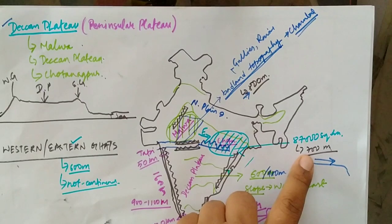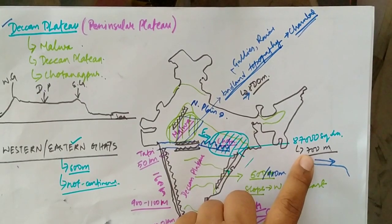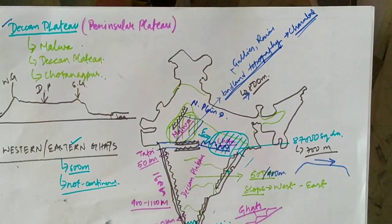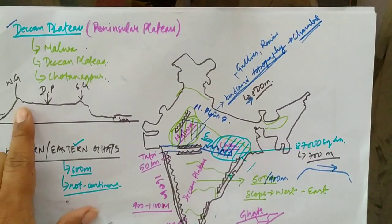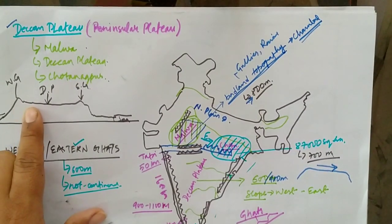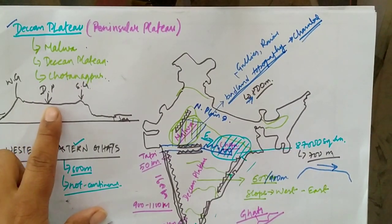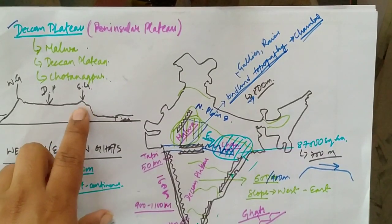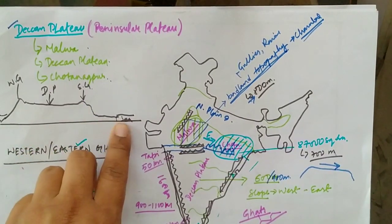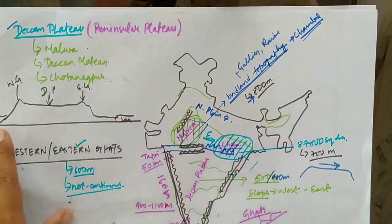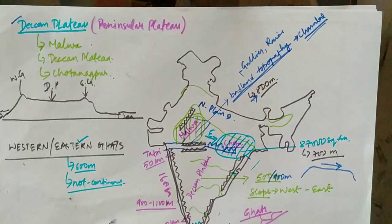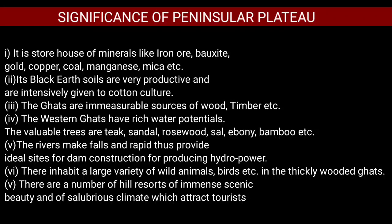The area covered by the Chotanakpur Plateau is 87,000 square kilometers and the height is around 700 meters above sea level. If we see the horizontal cross-section of the Western Ghats, it is sloped towards the east, bounded by the Eastern Ghats, then the eastern coastal plains, and finally the Arabian Sea.